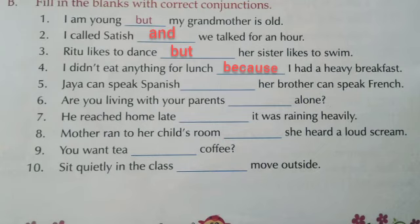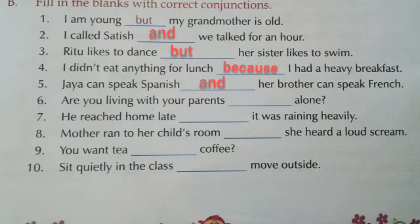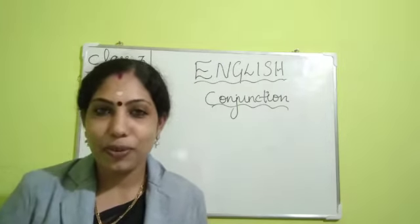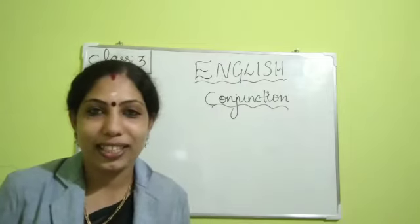Fifth question: Jaya can speak Spanish — her brother can speak French. The conjunction we need to use here is 'and': Jaya can speak Spanish and her brother can speak French. Some more exercises are there in your textbook that you have to do as homework.